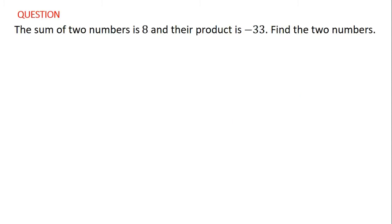So let's look at the question for this video. The sum of two numbers is eight and their product is negative 33. Find the two numbers. The aim for this question is to find two numbers that we do not know.